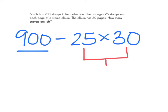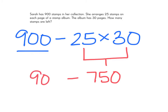So 25 times 30 will be 750. Sally has organized 750 stamps onto her 30 pages. Let's take that away from our 900. We can subtract now that we've completed our multiplication, giving us an answer of 150 stamps remaining in her collection.